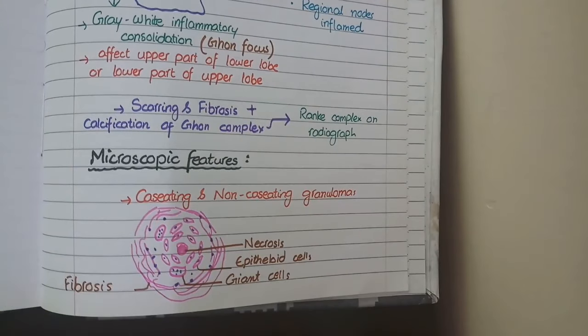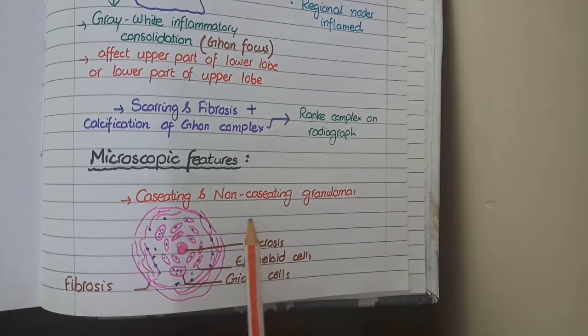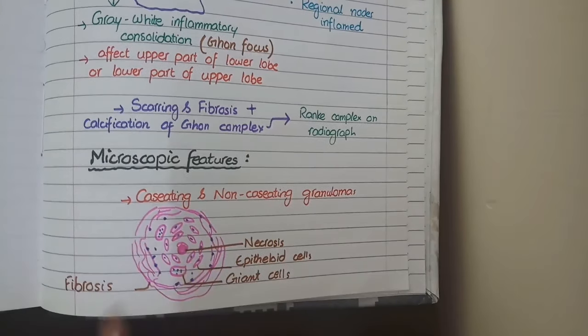Now for microscopic features, tuberculosis causes a mixture of both caseating and non-caseating granulomas. Caseating granulomas are those that have a central area of caseous necrosis, and non-caseating granulomas are those that do not have this necrotic center.